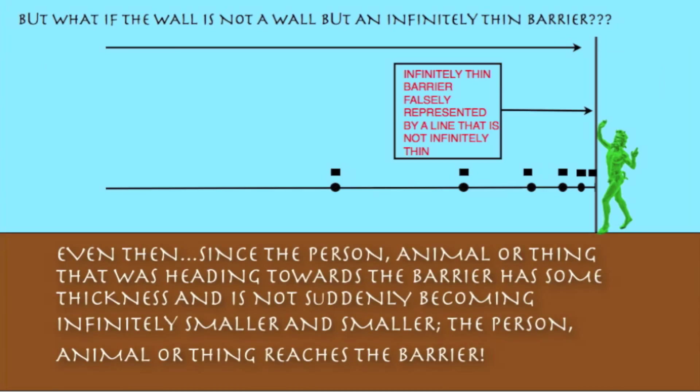But what if the wall is not a wall, but an infinitely thin barrier? Even then, since the person, animal, or thing that was heading towards the barrier has some thickness and is not suddenly becoming infinitely smaller and smaller, the person, animal, or thing reaches the barrier.